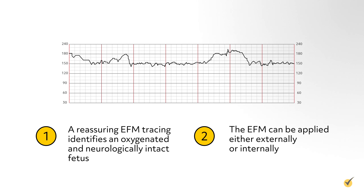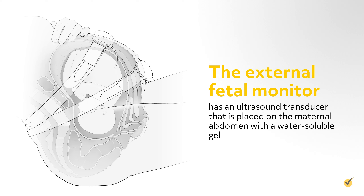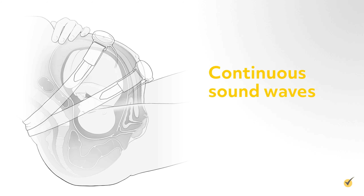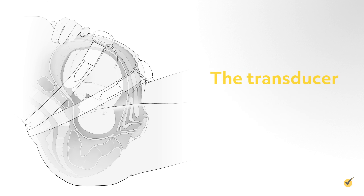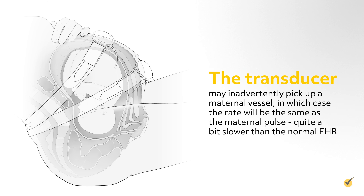Welcome to this video on fetal heart rate interpretation. Assessment of the fetal heart rate is an important indirect measure of fetal oxygenation during the antepartum and intrapartum stages of pregnancy. Fetal heart rate is measurable by ultrasound at around 6 weeks and is assessed throughout the pregnancy, as well as during labor and delivery. A normal fetal heart rate ranges from 110 to 160 beats per minute.